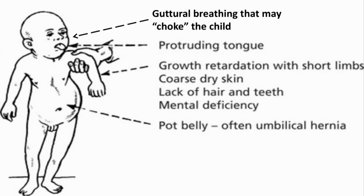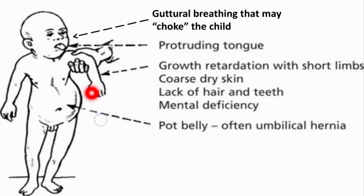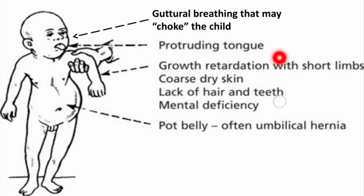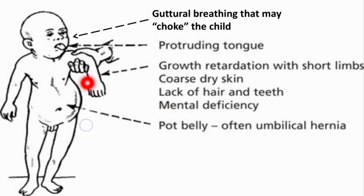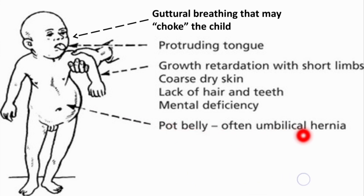The clinical features of a cretinous child include dwarfism, mental retardation, irritability and constant weeping, guttural breathing that may choke the child, protruding tongue, growth retardation with short limbs, coarse dry and scaly skin, lack of hair and teeth, mental deficiency, and a very prominent sign is pot belly — often with umbilical hernia.